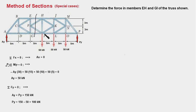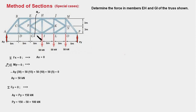Can we find another section which cuts only three members? No — apparently we can't find a section which will cut the truss into two parts with only three members intersected. Such a section is apparently not possible. So let us proceed with section AA', hoping we'll find some workaround and find a solution.